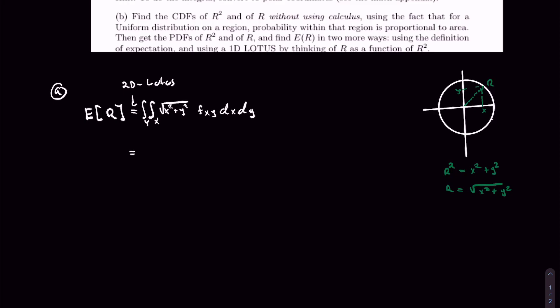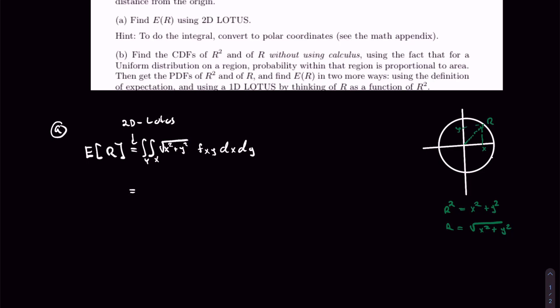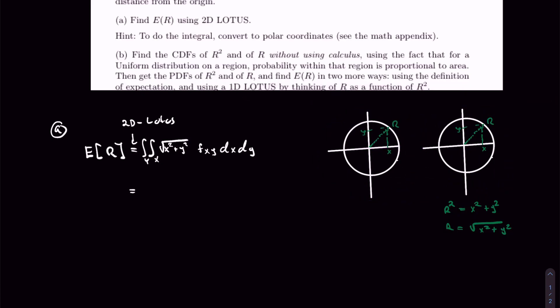We are given a hint to use polar coordinates, and you might ask why. It's much easier to work with polar coordinates when you have a circle. In polar coordinates, instead of X and Y, we have an angle θ and a radius R that we integrate over, moving in different directions.